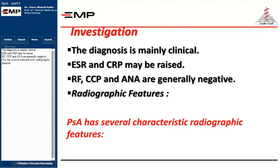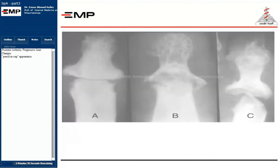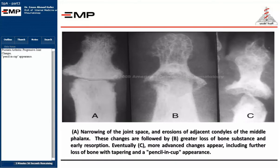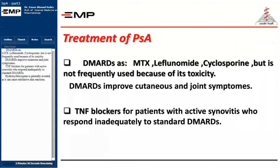Psoriatic arthritis has several characteristic radiographic features, including progressive joint changes and pencil-in-cup appearance. X-ray also shows spur formation in patients with psoriasis presenting with heel pain.